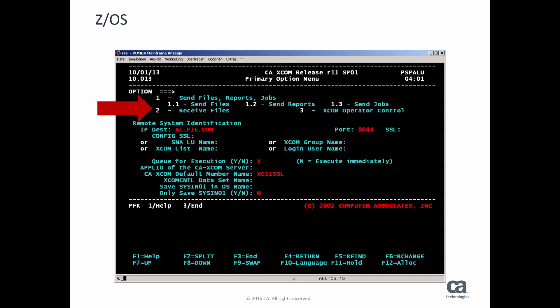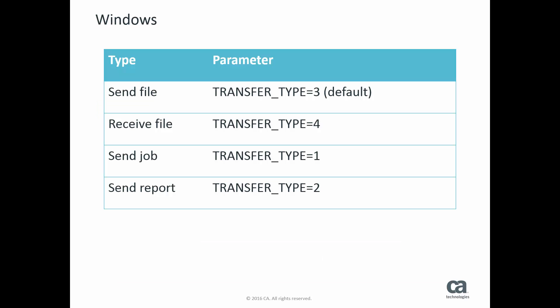When you are using the ZOS Online interface, you specify the type of transfer by entering the appropriate number in the Options field. On Windows, you specify the type of transfer by using parameter TransferType in the XCOM.conf file for a specific transfer, or in XCOM.GLB for all transfers. The different types are represented by these numbers. The most common, sending a file, is considered the default if that parameter is not specified.